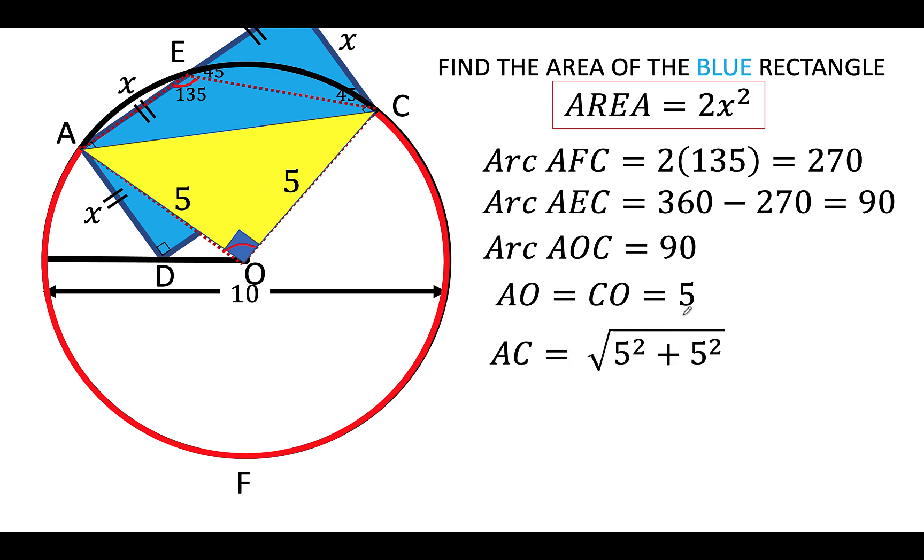So using the Pythagorean formula, the length of side AC is equal to the square root of the sum of the squares of the two legs with a length of 5 units each. And so computing now for side AC, that is equal to 5 times square root of 2. That is now the length of this side AC.